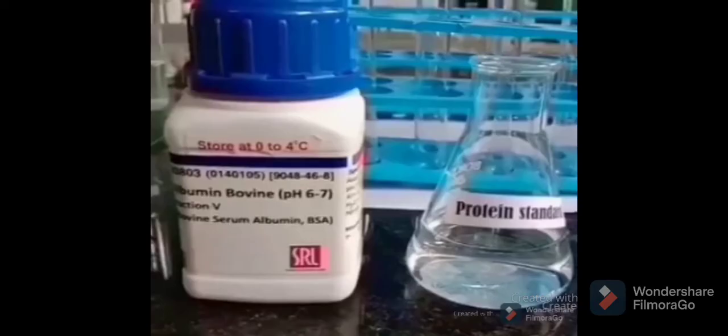In quantitative assays, a standard is needed. Here, protein BSA of 25 milligram in 100 ml 0.1 normal NaOH is used. The standard is needed to assay unknown concentrations of protein solutions and is used to make serial dilutions of standards.